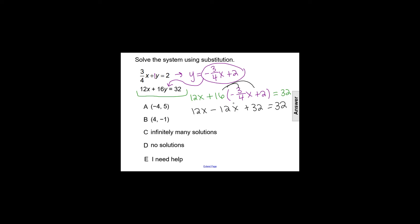12x minus 12x is 0. Our variable has just been eliminated, it's canceled out. And we end up with a statement that 32 equals 32. That is a true statement.